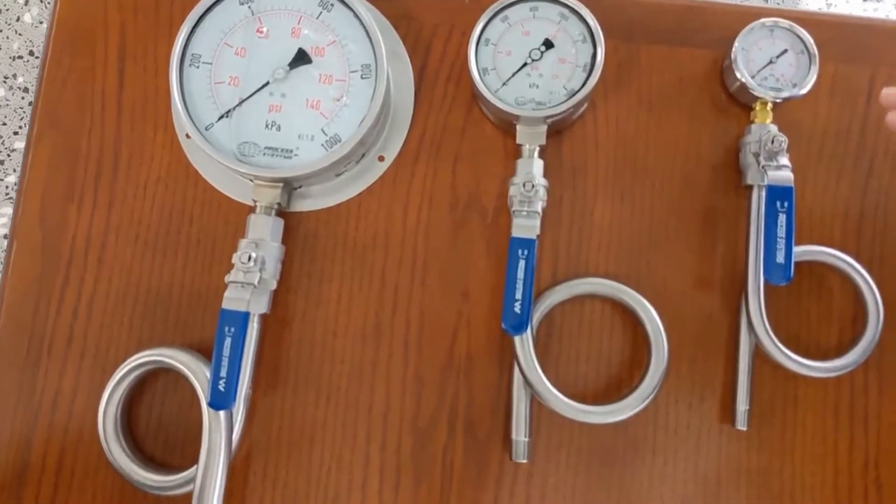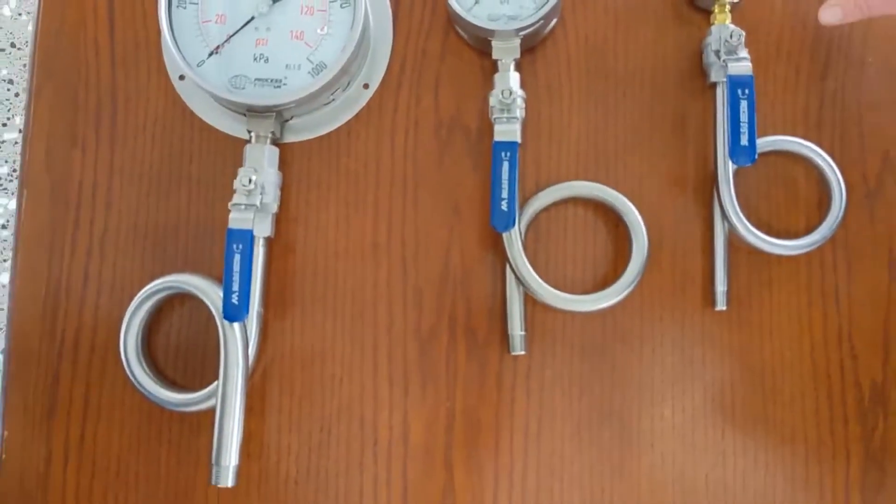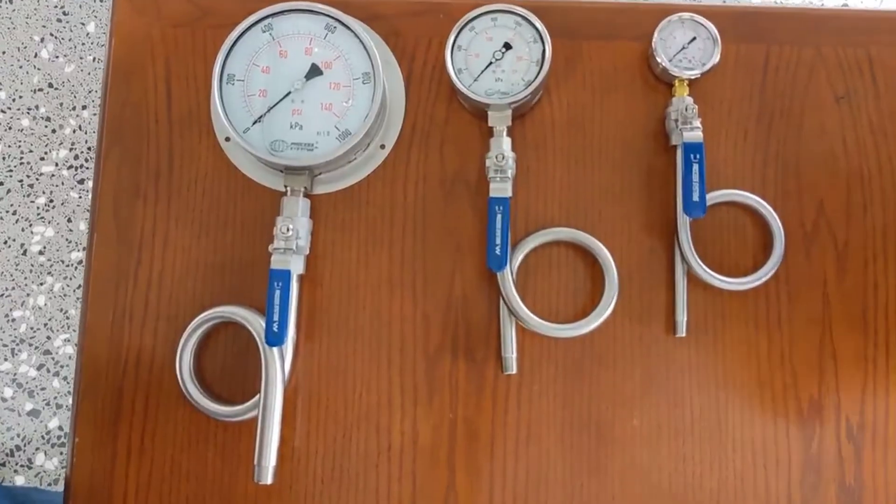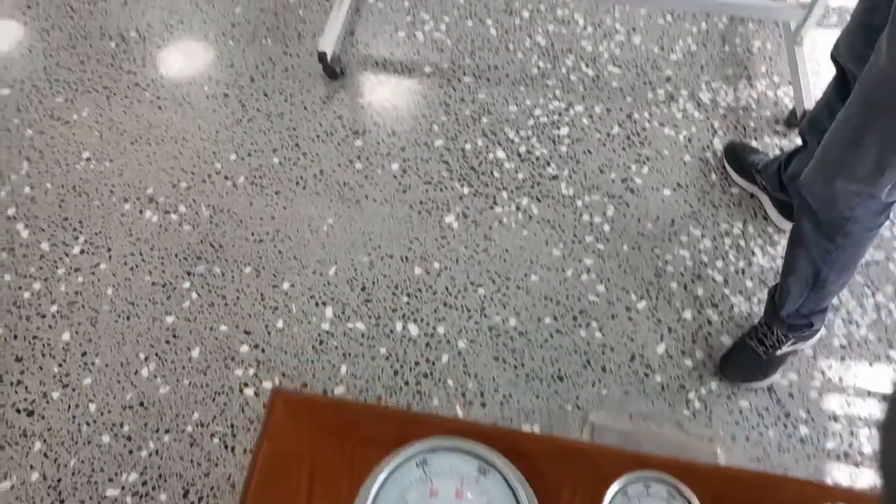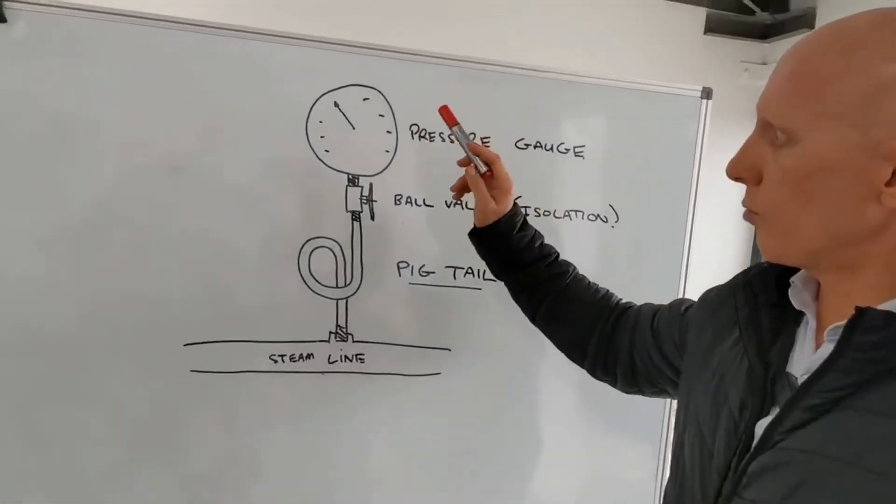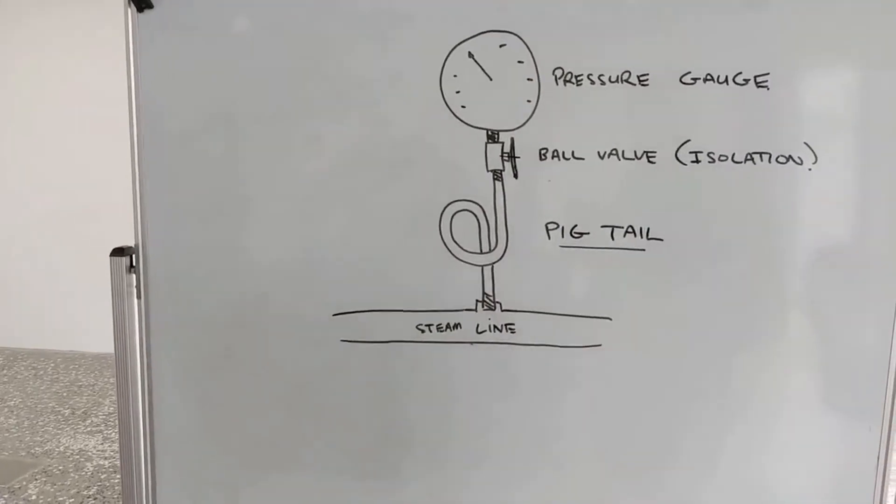We'll show you why we use this configuration with the gauge cock or isolating ball valve and then the gauge. The idea behind a pigtail siphon is they're really used in steam applications, and they're used in steam because you want to protect the pressure gauge from the extreme heat that you get from steam.